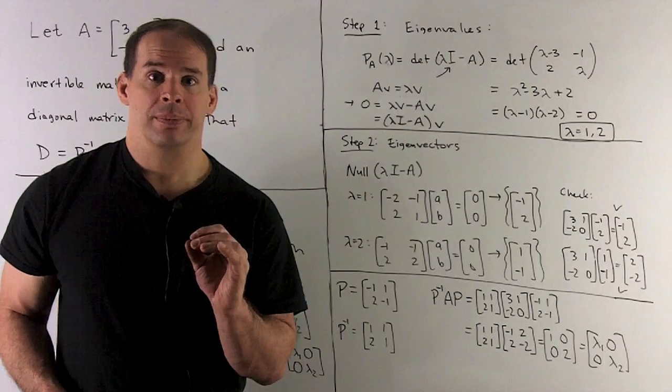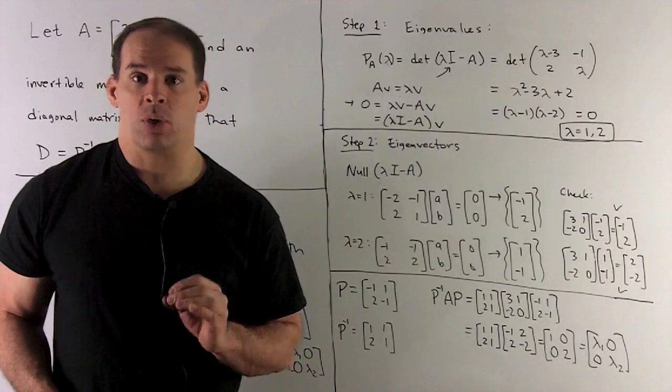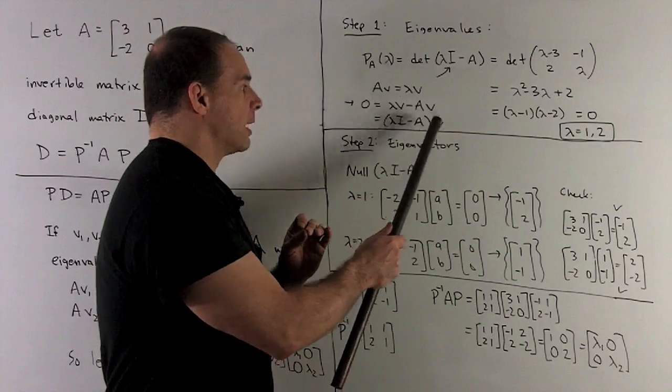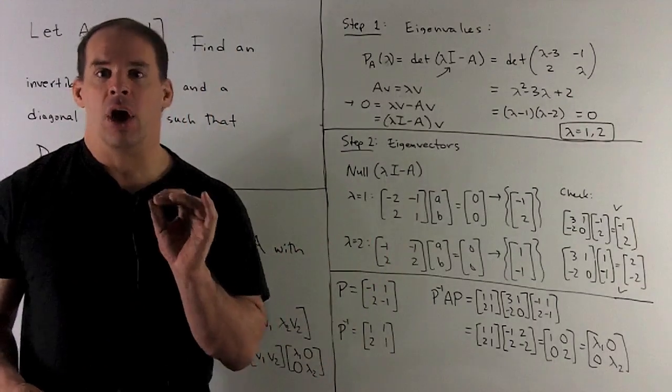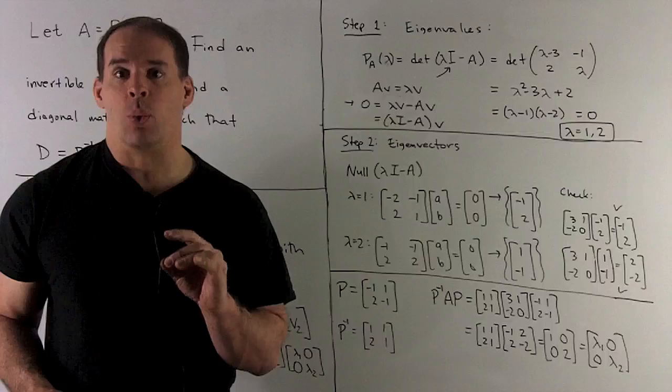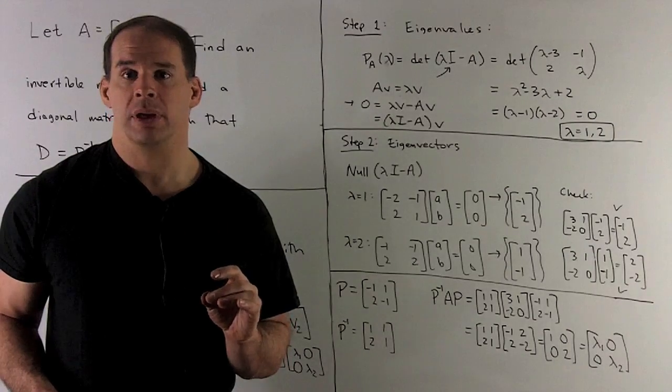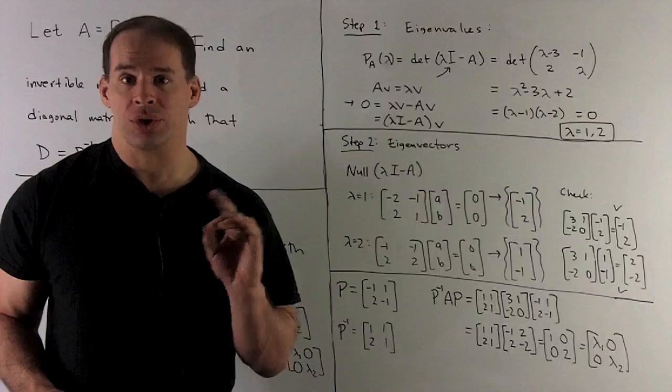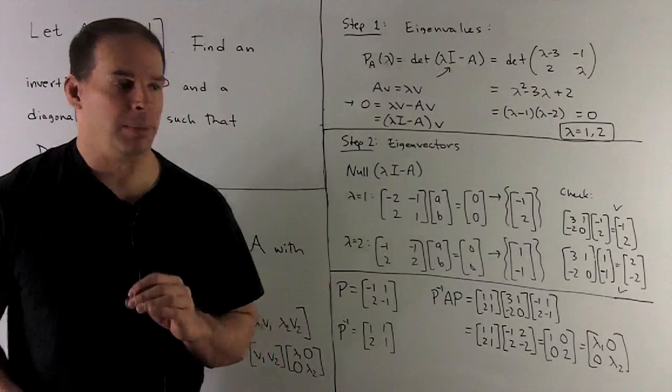Next, eigenvectors. Note, we're still in the same equation. I want to solve lambda I minus A times V equals zero. I know I can only find non-zero solutions if lambda is equal to one or two. So, we're looking for the null space when lambda is equal to one or two.